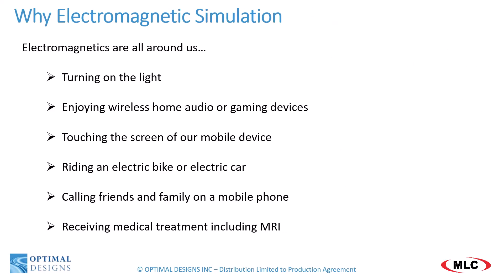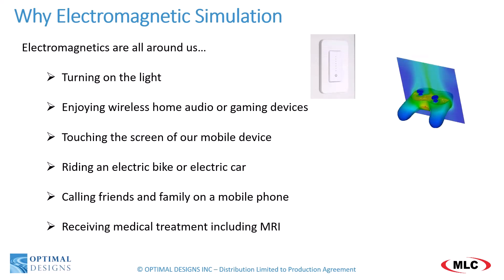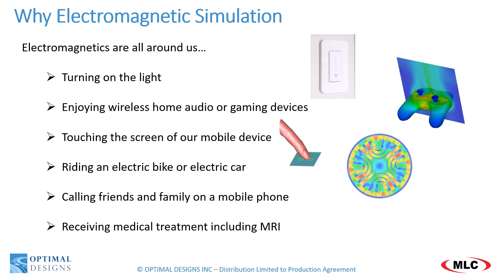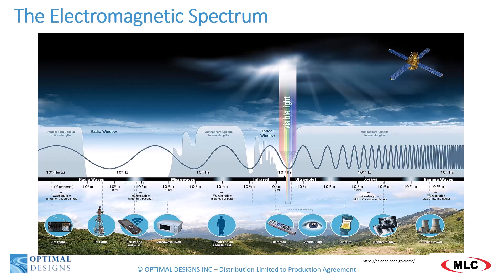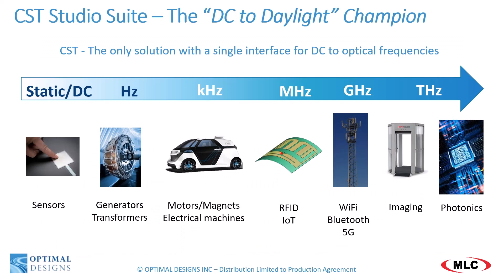Electromagnetics are all around us, including turning on the lights, enjoying home audio or gaming devices, touching the screen of our mobile device, riding an electric bike or car, calling friends on a mobile phone, or even receiving medical treatment including the MRI. In the electromagnetic spectrum, we can see the range of frequencies and different types of devices in this image, including the very small fraction of visible light. Electromagnetic equations can be written in several forms, including static, low frequency, and high frequency.